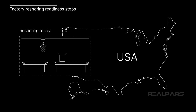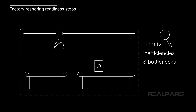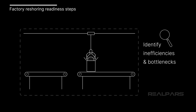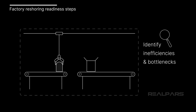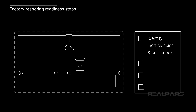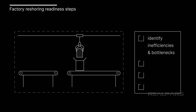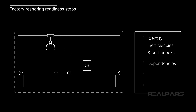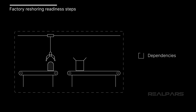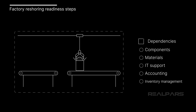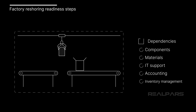The first step to make your factory reshoring ready is to assess your current operations to determine where there may be inefficiencies and bottlenecks in your current supply chain and production processes. Many professional organizations have prepared checklists and procedures for determining readiness. Steps you can take include making a list of all of the dependencies your operation has — look at components, materials, and other processes such as IT support, accounting, and inventory management that may lie with overseas providers.